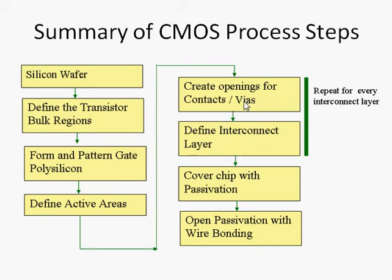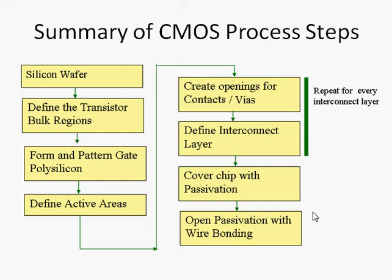Finally, we protect the chip using the passivation layer. Openings are made in the passivation layer so that bond wires from the external package can be brought into the die. That concludes the summary of the CMOS process.